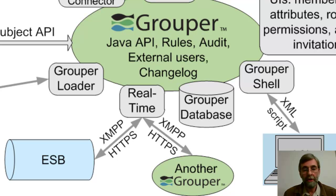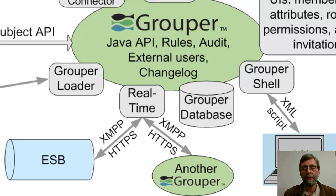There are also real-time provisioning capabilities and integration capabilities with Grouper, which depend on Grouper's change log. Real-time notifications of changed events can be transmitted over XMPP or over HTTPS, which is great for integrating with enterprise service buses. That's also the basis for integrating two or more different Grouper instances together — for use cases where several organizations, each running their own Grouper instance, need to collaborate on a large-scale project, like a large science project or a virtual organization, and need to share project-wide groups across their Grouper instances.